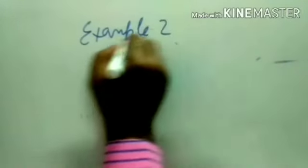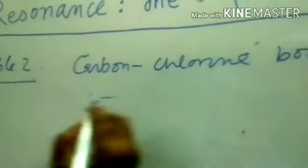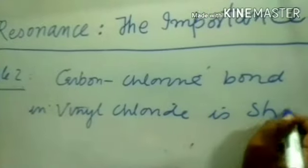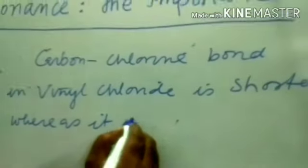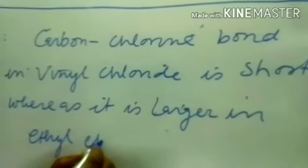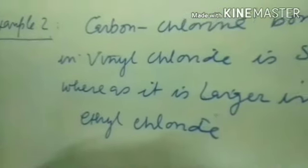Example 2 is in the same pattern: the carbon-chlorine bond in vinyl chloride is shorter, whereas in vinyl chloride it is larger than in ethyl chloride. This can be answered in accordance with the previous examples.